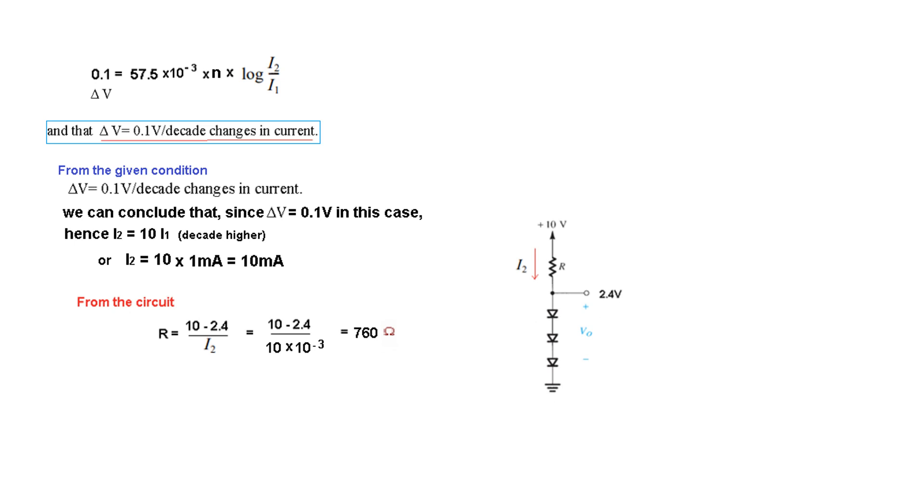Okay, now we come to the circuit. We have found I2 to be 10 mA. This is 10 volt, this is 2.4 volt. So we have to find R. You can say R is V over I: 10 minus 2.4 divided by I2. I2 is 10 mA, and so the answer is 760 ohm.